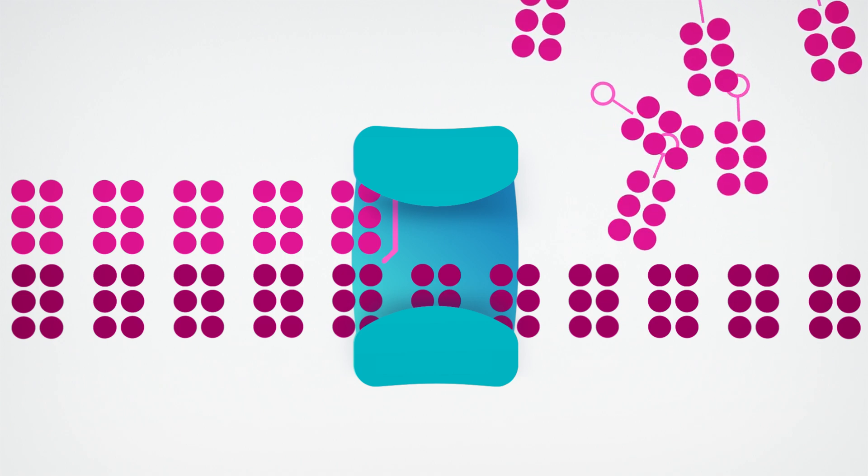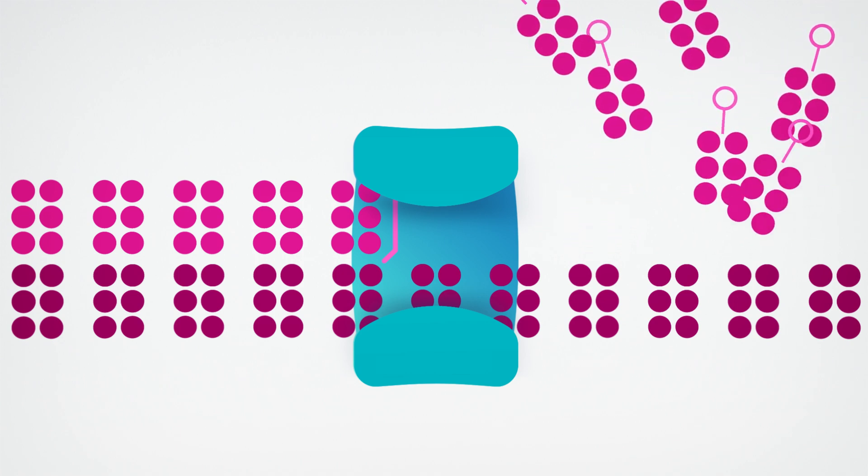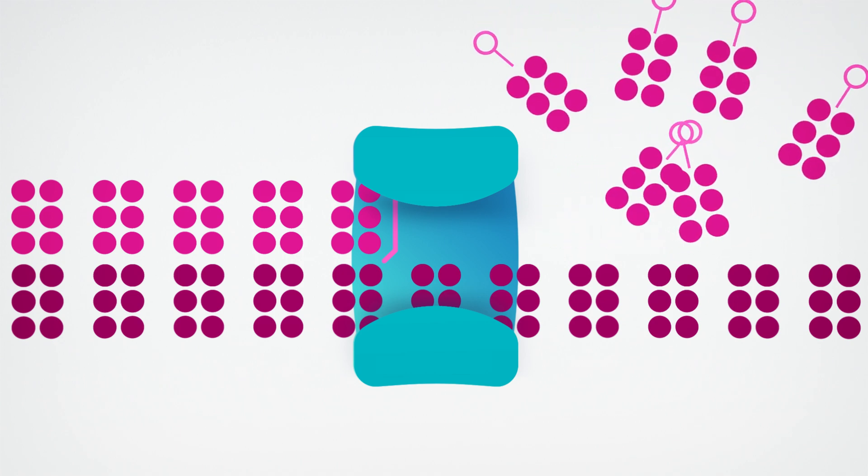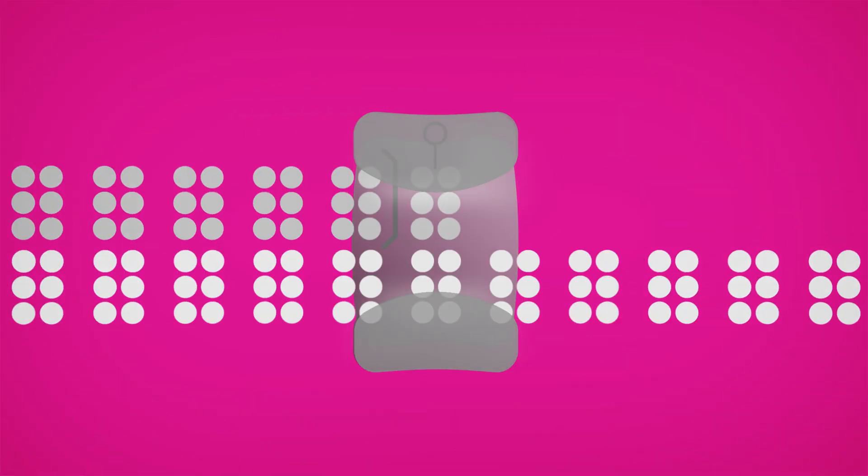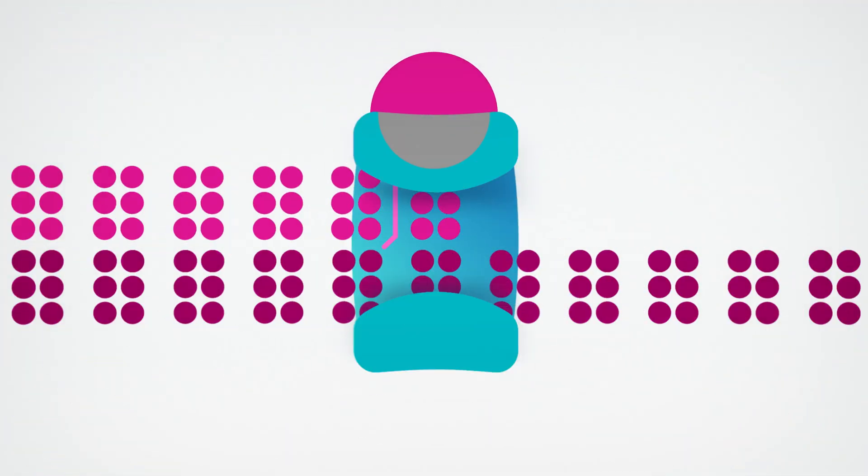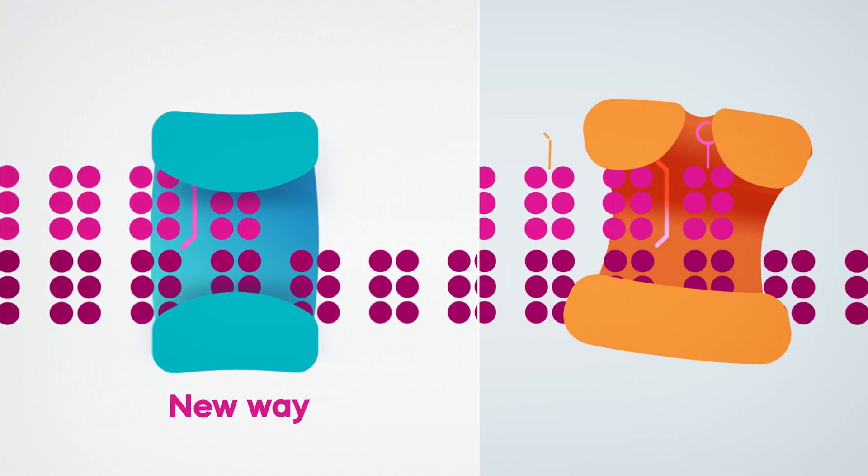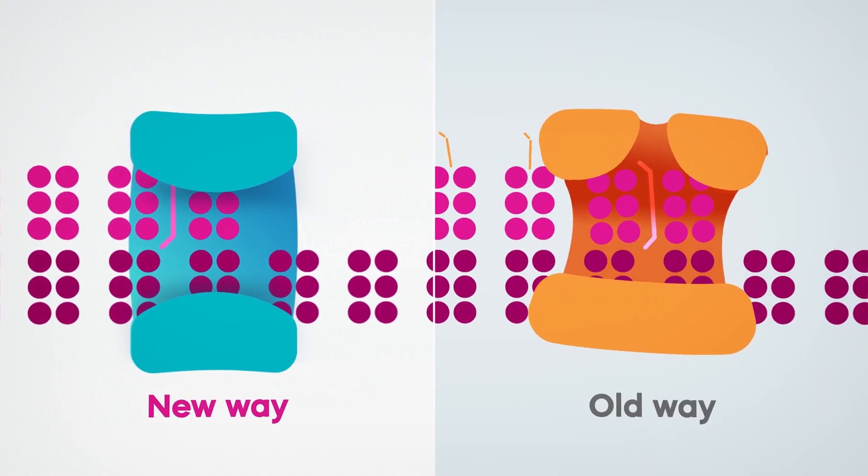The correct fluorescently labeled base then forms a ternary complex with the template DNA. This allows the fluorophore to be detected while held under optimum conditions and interrogation of the correct base. Since we don't covalently incorporate fluorophore-labeled bases, there are no residual linker arms and no molecular scarring.